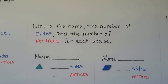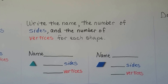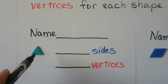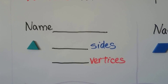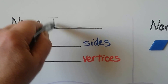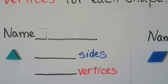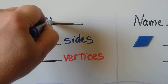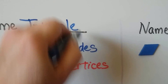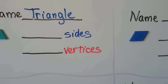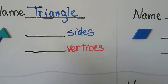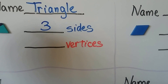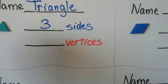We can write the name, the number of sides, and the number of vertices for each shape. This shape — do you know it? It's a triangle. It has one, two, three sides and one, two, three vertices.